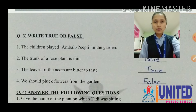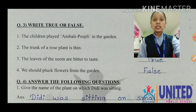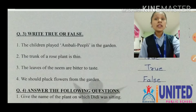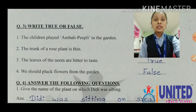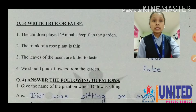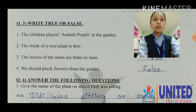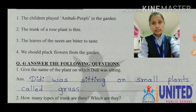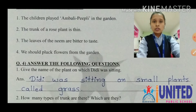Question number four: answer the following questions. Number one: give the name of the plant on which didi was sitting. We already read this in the MCQ — didi was sitting on the small small plants, which is called grass. Answer: didi was sitting on small plants called grass. G-R-A-S-S, grass.